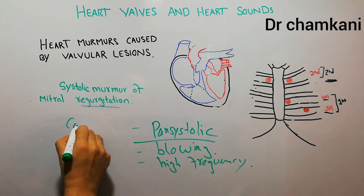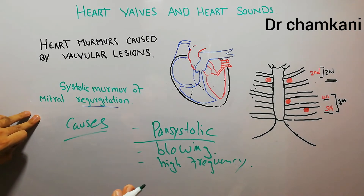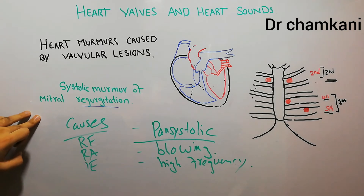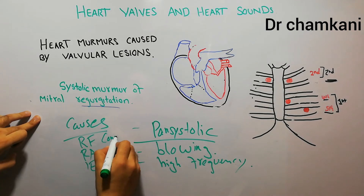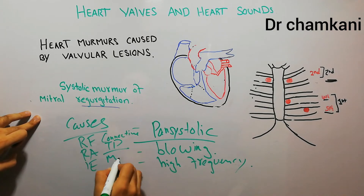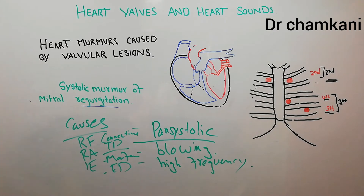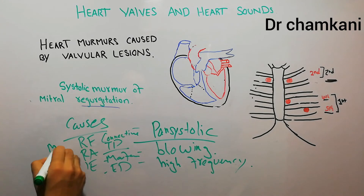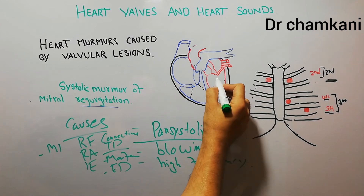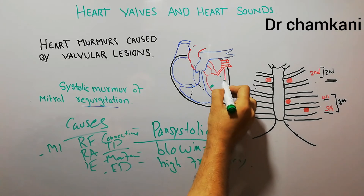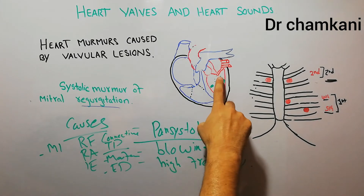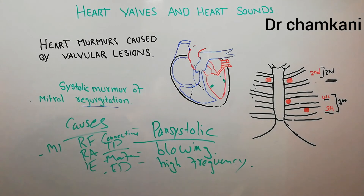The causes of mitral regurgitation include rheumatic fever, rheumatoid arthritis, infective endocarditis, and connective tissue disorders like Marfan's syndrome and Ehlers-Danlos syndrome. There are also other conditions such as valvotomy or valvuloplasty. Similarly, myocardial infarction — a heart attack — can cause damage to the chordae tendineae or the papillary muscles which hold the valve back, and when they are damaged the valve cannot close properly during contraction.